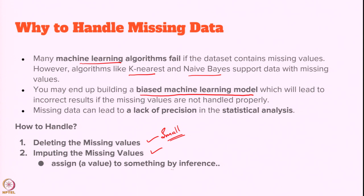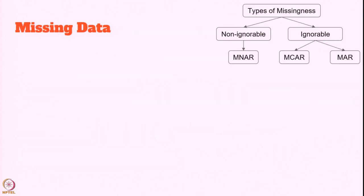There are two cases: if the dataset is extremely large and missing values are very few, we can delete the data. If it is small, we cannot do that. Imputing can be used for both small and large datasets if the imputing technique makes sense for the given data. Before understanding the various ways to impute, we have to know what type of data is missing. There are three categories: MNAR, MCAR, and MAR.